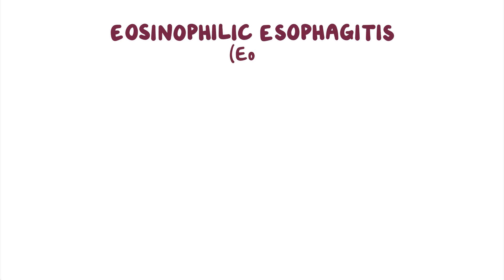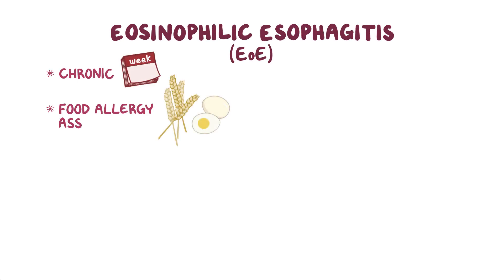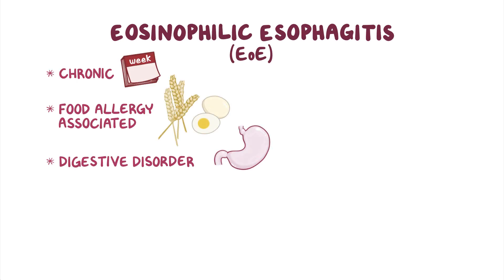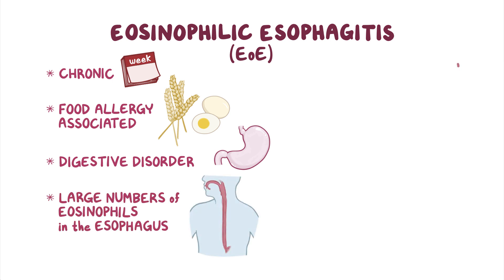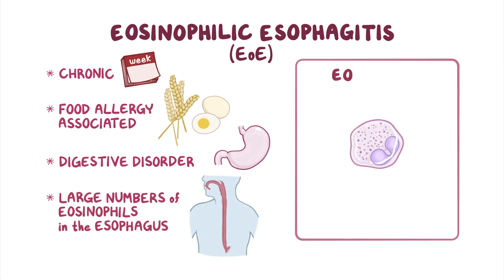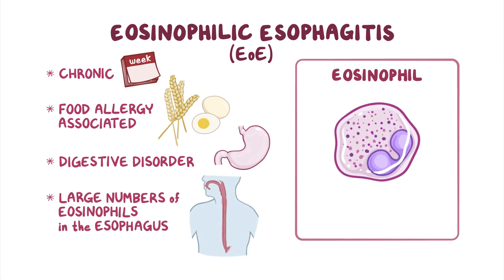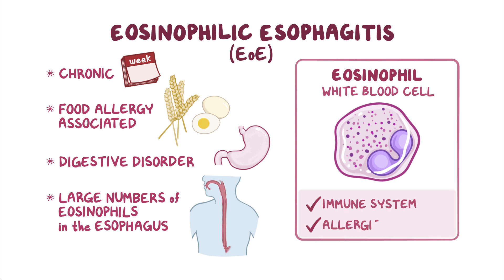Eosinophilic esophagitis, or EOE, is a chronic food allergy-associated digestive disorder in which people have large numbers of eosinophils in the esophagus. Eosinophils are a type of white blood cell that play many roles within the immune system and are involved in allergic reactions.